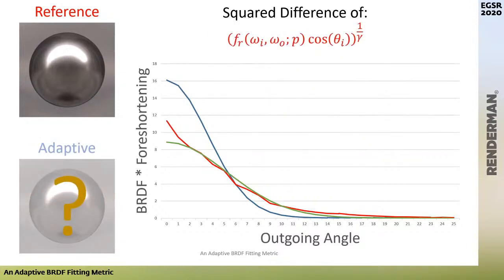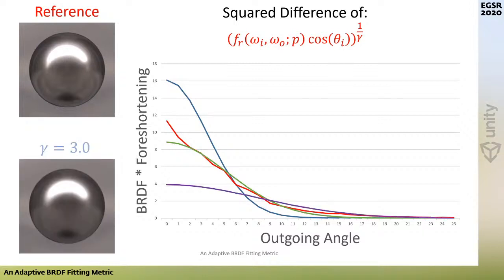We propose a compression function that raises the BRDF times foreshortening to the power of 1/gamma. This gives a metric whose compression strength depends on a free parameter gamma. For a gamma value of 3, the compression is extremely strong. While the rendering looks plausible, it is a bit blurry — let's see what happens as we decrease gamma.